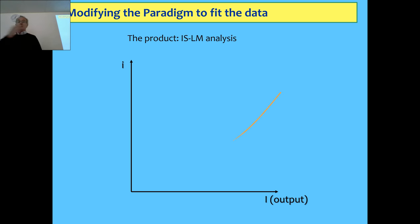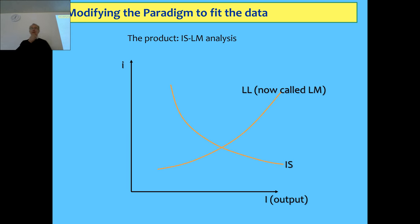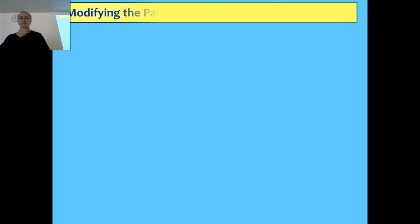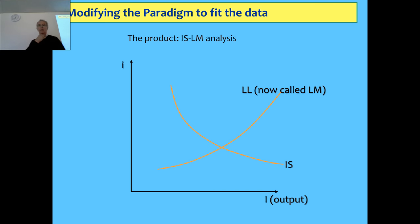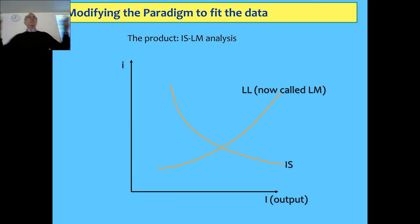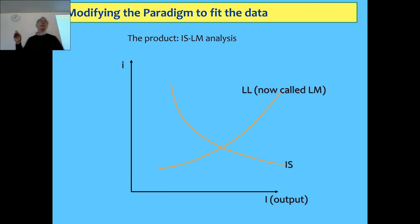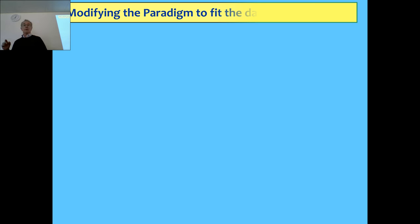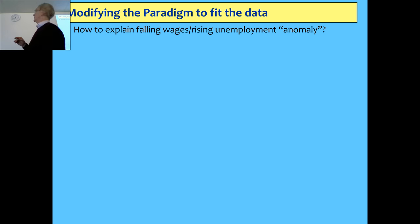Putting the two curves together, you get the IS curve — interest rate on the vertical, output on the horizontal — sloping downward, with the LM curve sloping upward. Everything happens at equilibrium where they intersect. This looks just like micro, only it's supposed to cover two markets and be about macroeconomics. But what's left out is anything about the price level — there's a big hole in the theory.